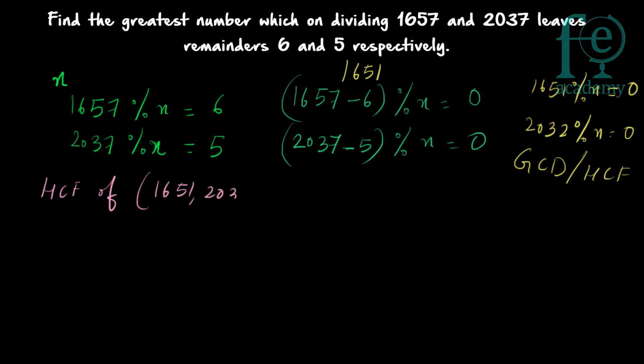Your aim is to find the HCF of (1657 − 6) and (2037 − 5), which is the HCF of 1651 and 2032. To find the HCF, use the long division method. Divide the larger number by the smaller: 2032 divided by 1651. The quotient is 1, since 1651 goes into 2032 only once.